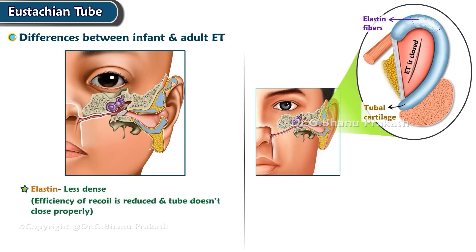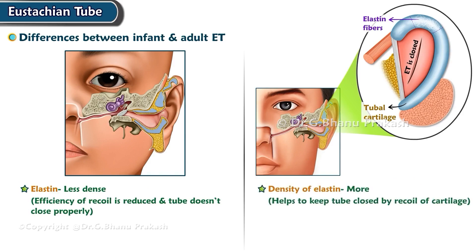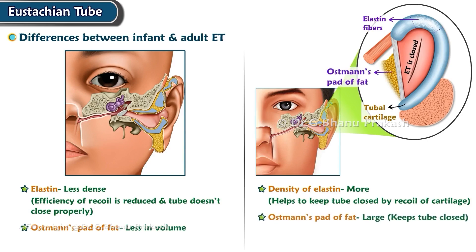As the density of elastin is greater in adults, it helps keep the tube closed by recoil of the cartilage. Osman's pad of fat is less in volume in infants and larger in adults, which also helps keep the tube closed.